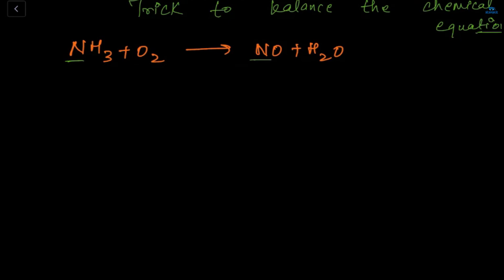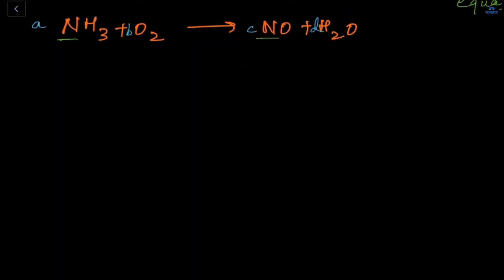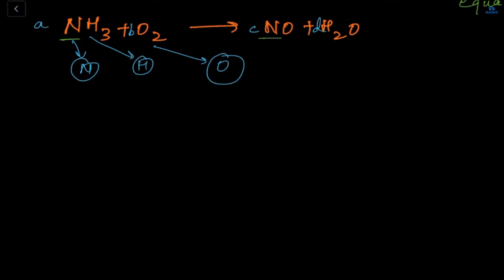This is difficult. What we will do is write a, b, c, and d. First we write a, b, c, d — one for each molecule. Then we look at each element. Here is my N, hydrogen, and oxygen. On the left-hand side, nitrogen is only one, and on the right-hand side nitrogen is also one. So we write: a = c.